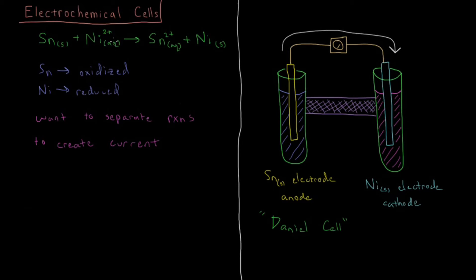Now let's look at the source of these ions — where tin ions and nickel ions are consumed and produced. In contact with the tin anode is an aqueous solution of tin sulfate, which is the electrolyte on this side. On the other side, we have aqueous nickel sulfate. Sulfate is a convenient counter ion because both tin and nickel have a 2+ charge, and sulfate has a 2− charge, making it a convenient 1-to-1 electrolyte.